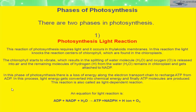The light reaction requires light and occurs in the thylakoid membrane. The light knocks the reaction center of chlorophyll found in the chloroplast. The chlorophyll starts to vibrate, resulting in the splitting of water molecule H2O. Oxygen is released into the air, and the remaining hydrogen from water stays in the chloroplast and gets attached to NADPH.